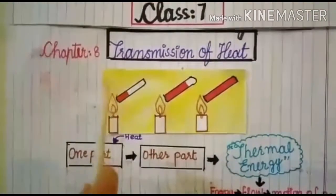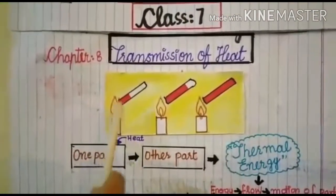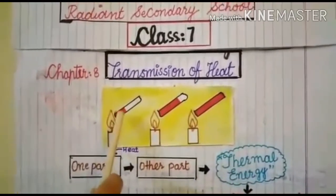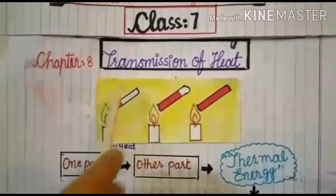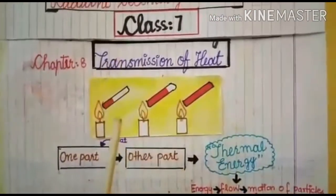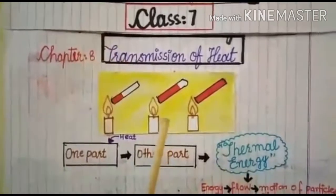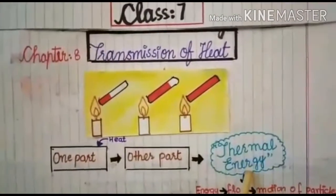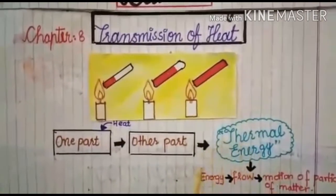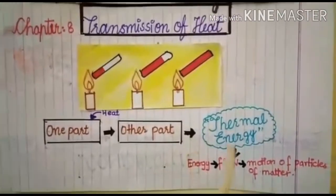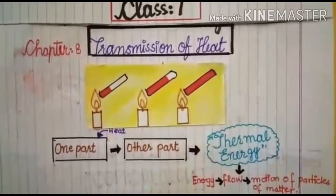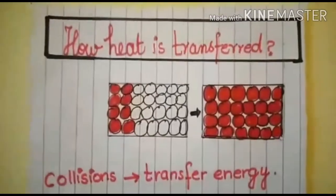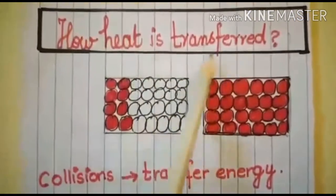In this example you can see that there is a candle and a metal rod. The heat is transferring from an object of higher temperature to an object of lower temperature. This transferring of heat is called thermal energy, which can be defined as energy flowing due to the motion of the particles of matter.